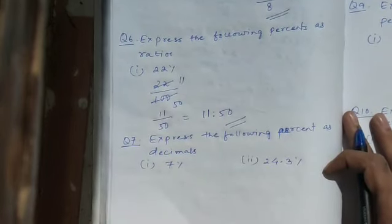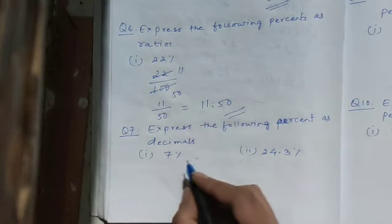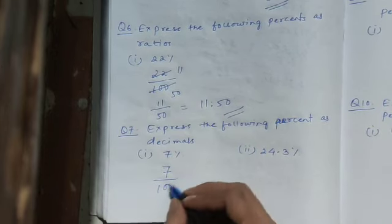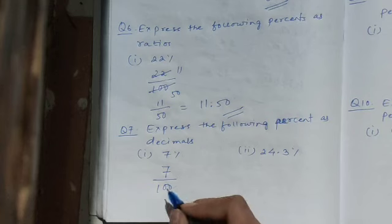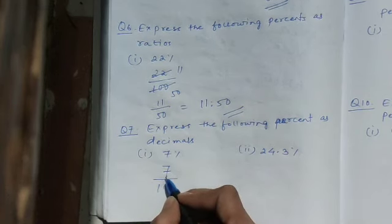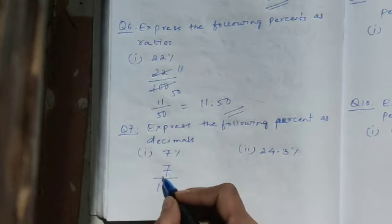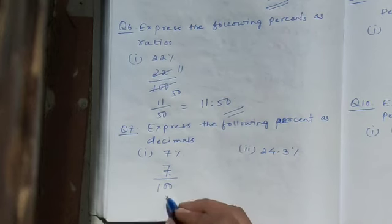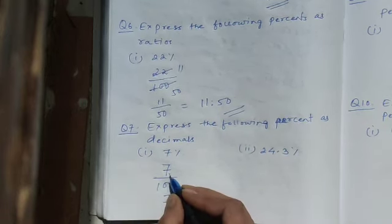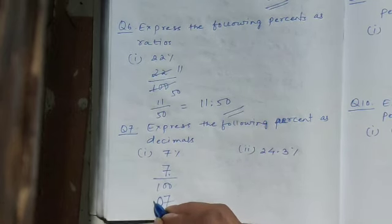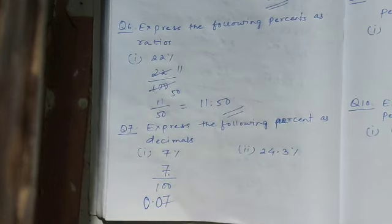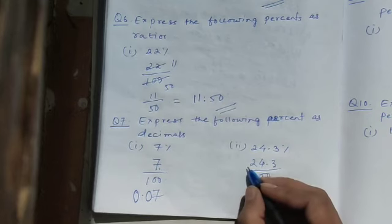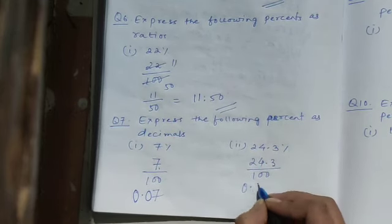Question number 7: express the following percent as decimal. The first step is the same — 7.4 percent becomes 7.4 by 100. For converting to decimal, we do not cancel. Count the zeros in 100: there are 2 zeros, so we move the decimal point backward 2 digits. Since there is no visible decimal, it is at the last. Moving back 2 digits: one digit is 7, another digit is not there so we put a zero. Answer is 0.074. Similarly, 24.3 percent becomes 24.3 by 100 — decimal jumps backward 2 times, giving 0.243.